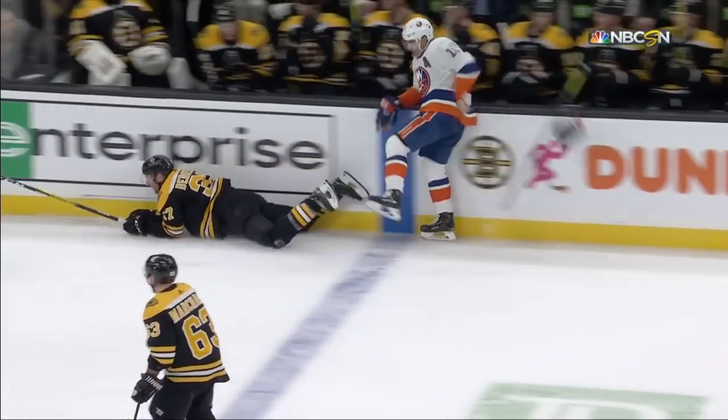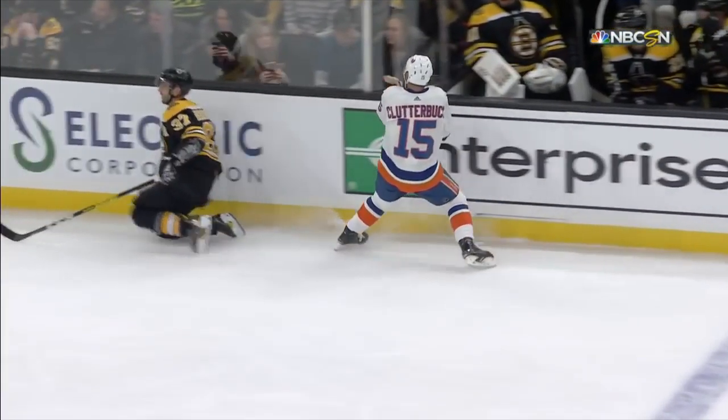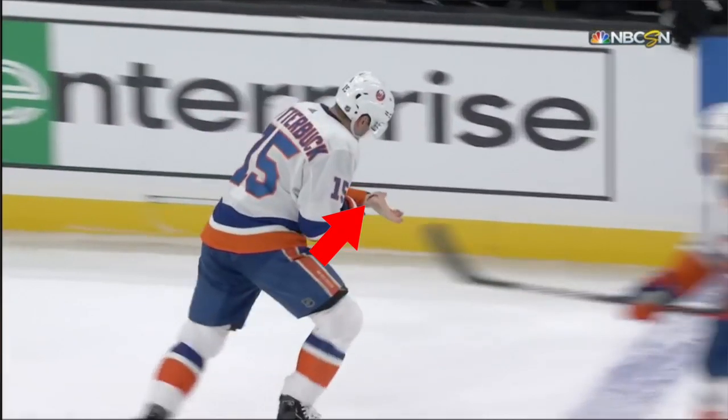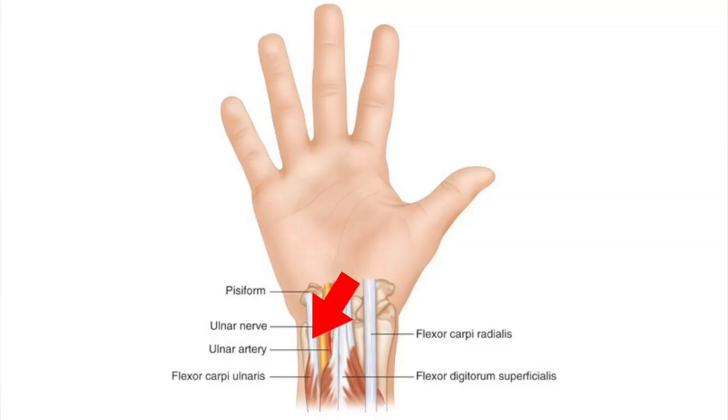In particular, the flexor digitorum superficialis bends the finger at the PIP, or proximal interphalangeal joint. If we look at the video, we can see that the laceration occurred on the ulnar aspect of the wrist, or the side closest to the pinky finger. The tendons present on the ulnar side include both the flexor carpi ulnaris and the flexor digitorum, so it's likely that one or both of these tendons was injured by the laceration caused by the skate blade.